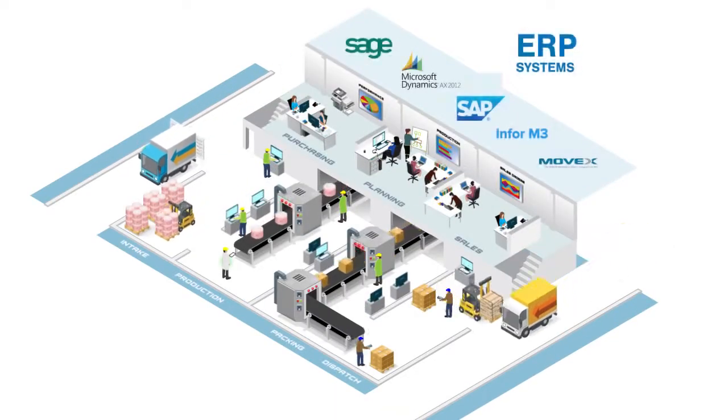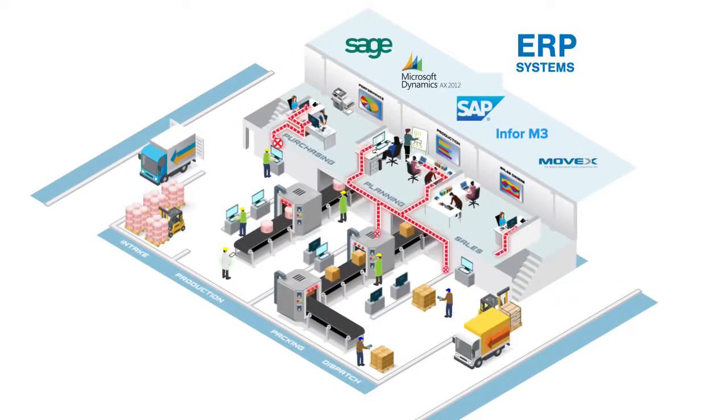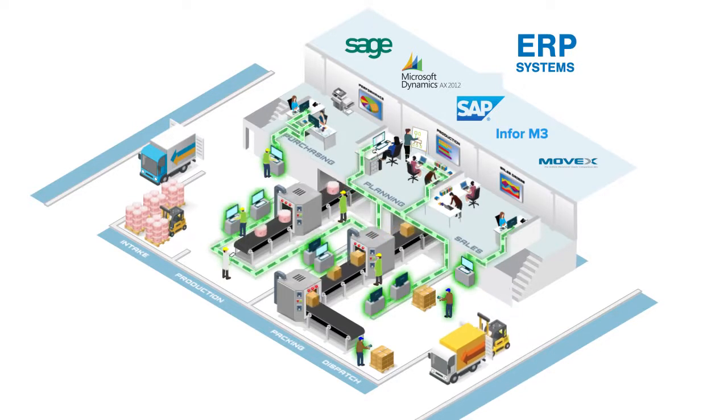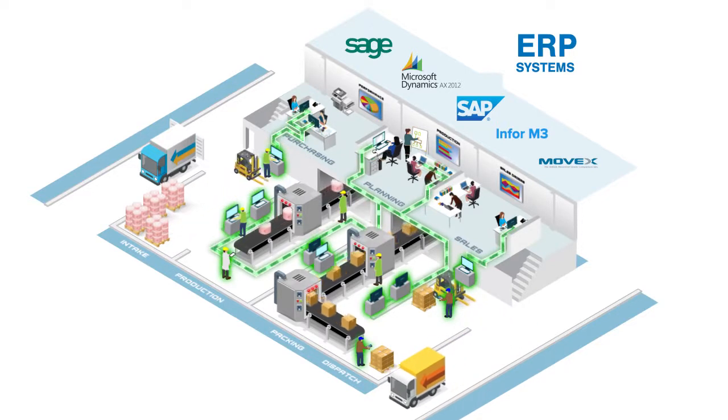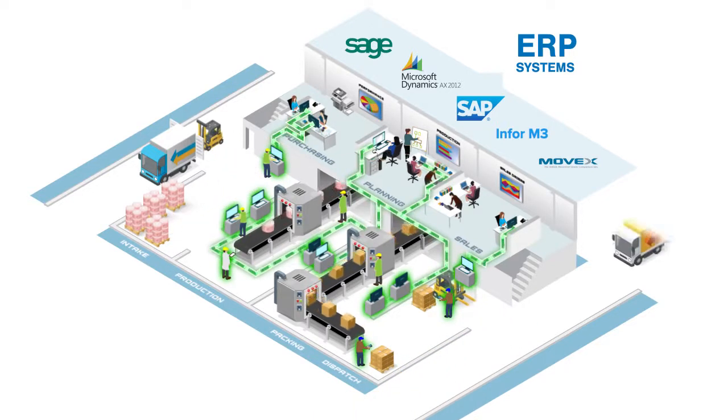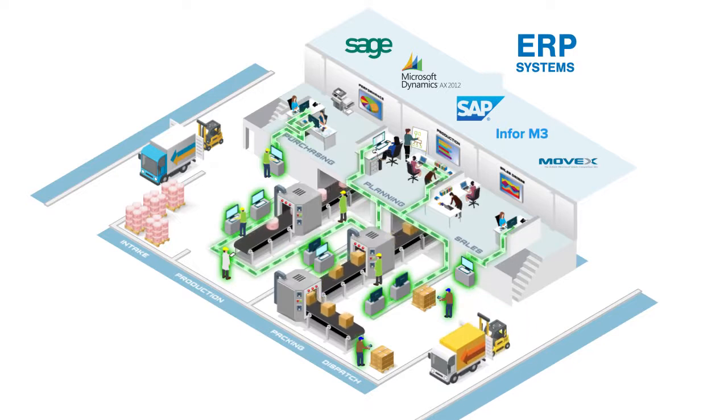So no more struggling to adapt a standard ERP system to the complexities of your production processes. As a software system specifically designed for factory floor environments, Emidex understands what you do and can work with your ERP to make it happen.